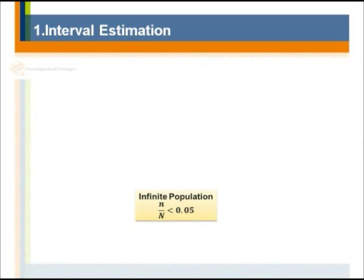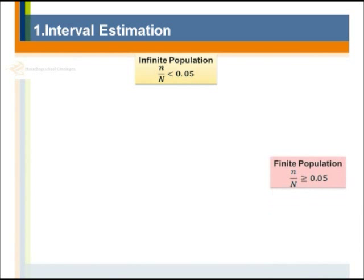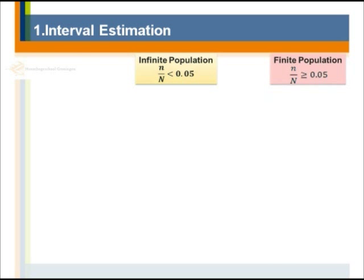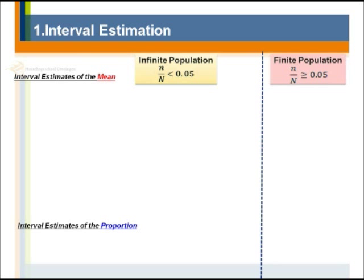Now let's have an overview of interval estimation. We distinguish between infinite population and finite population. When the population size is known and not very large, and the sample size n divided by the population size N is greater than or equal to 0.05, we call this a finite population. In that case, you need a more complicated equation to calculate the standard error. Otherwise, it is treated as an infinite population.